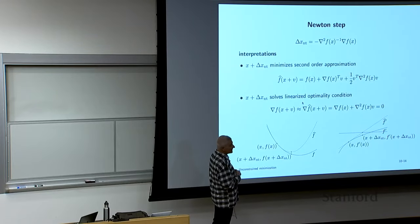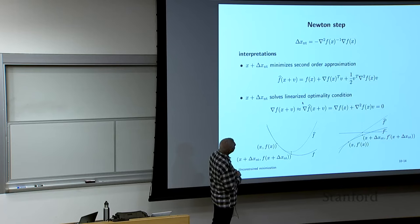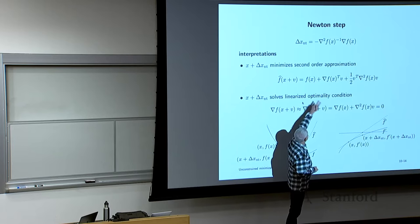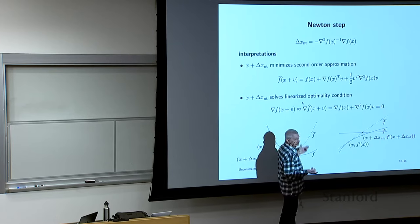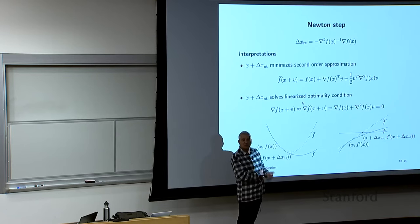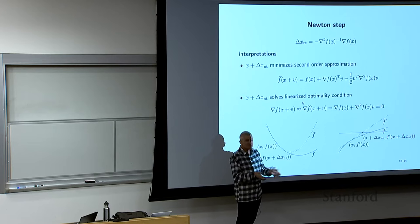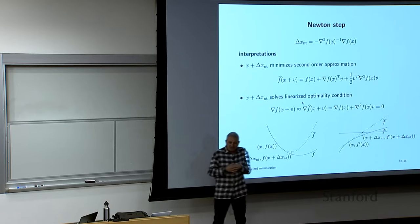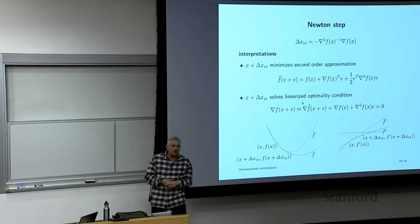Here's another completely beautiful way to see it. Take a second-order approximation of the function — nothing but that — and minimize it. If you form a second-order approximation of a function at a point and minimize it, you get the Newton step. That just makes perfect sense.